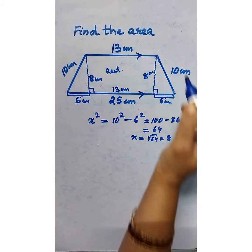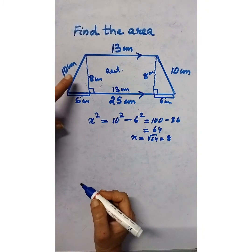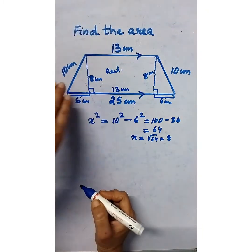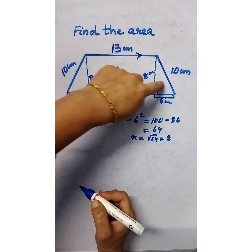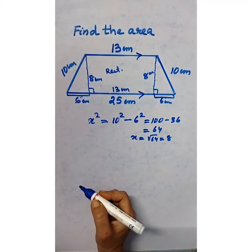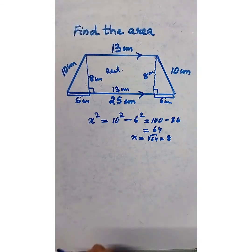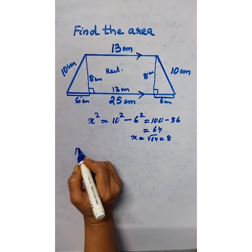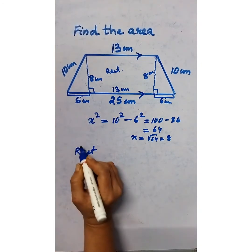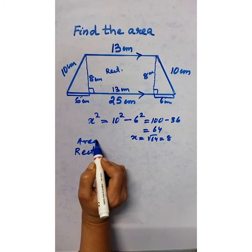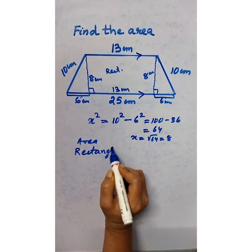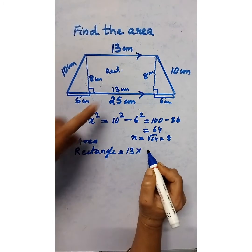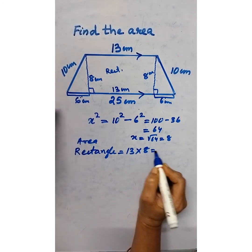This side is 8 centimeters, and the other side is also 8 centimeters. Now we have found the height. This total trapezium gives us two right angle triangles and one rectangle. Now let's find the area of the total figure. Area of the rectangle equals 13 × 8 = 104 square centimeters.